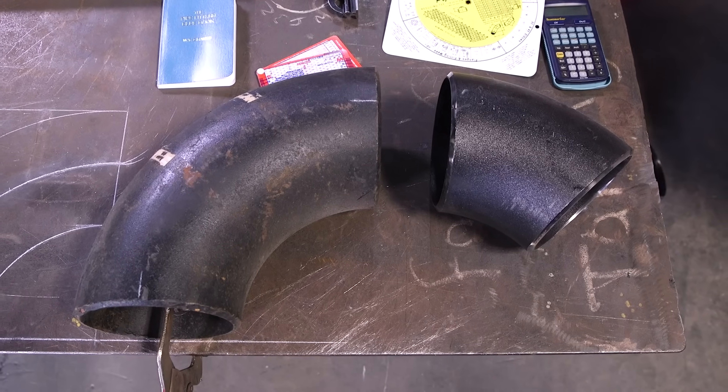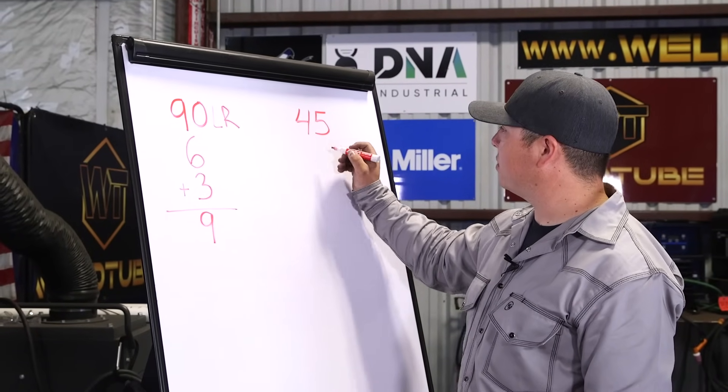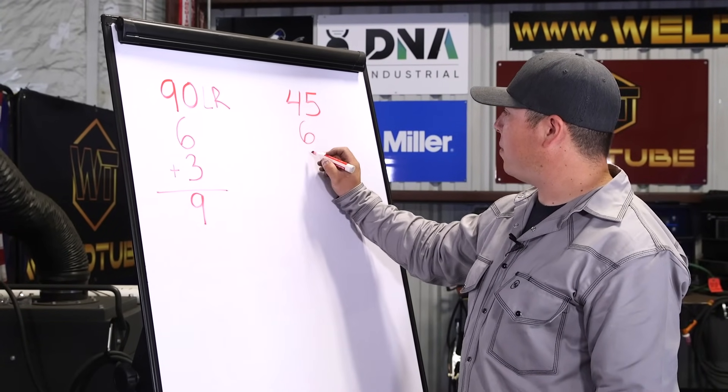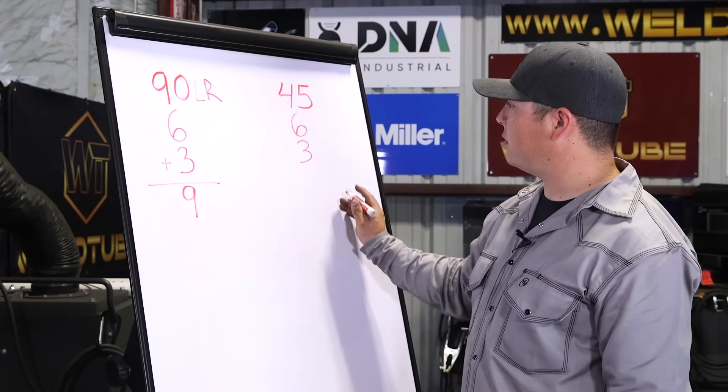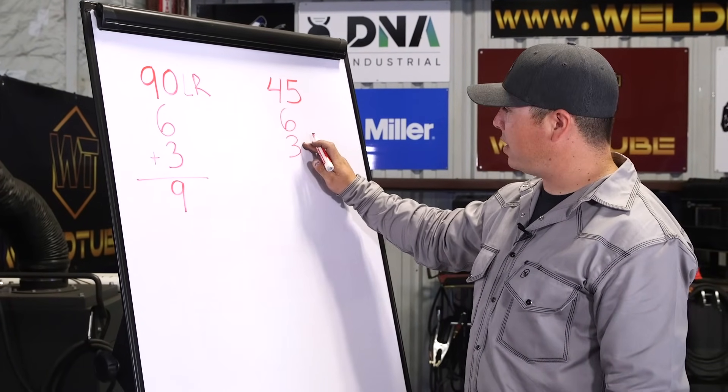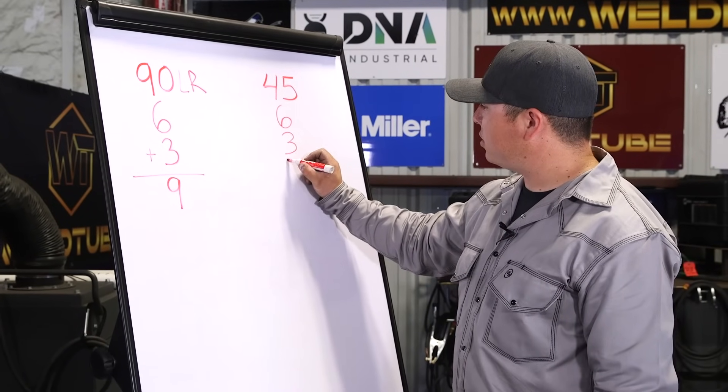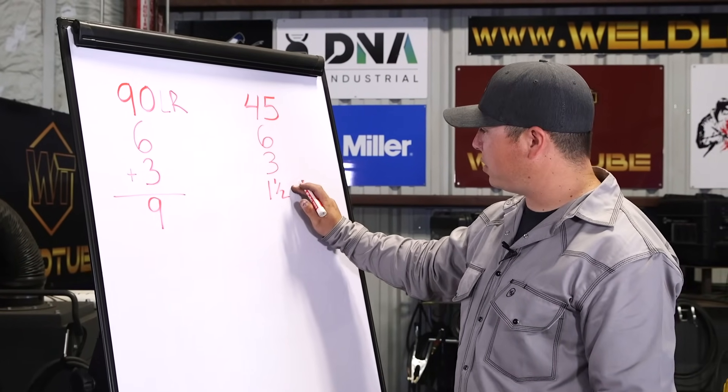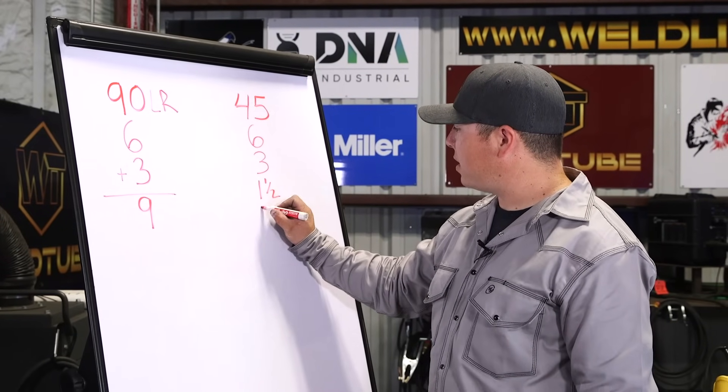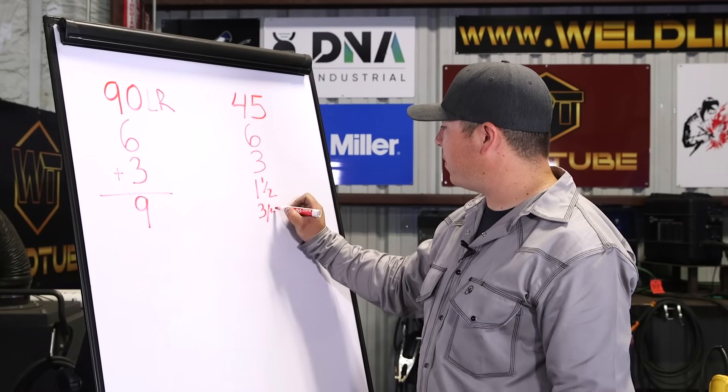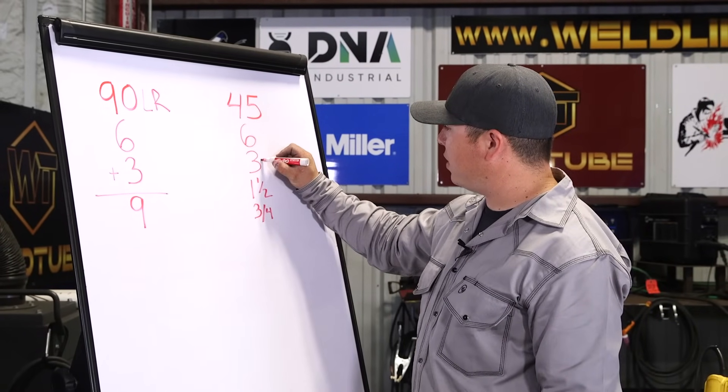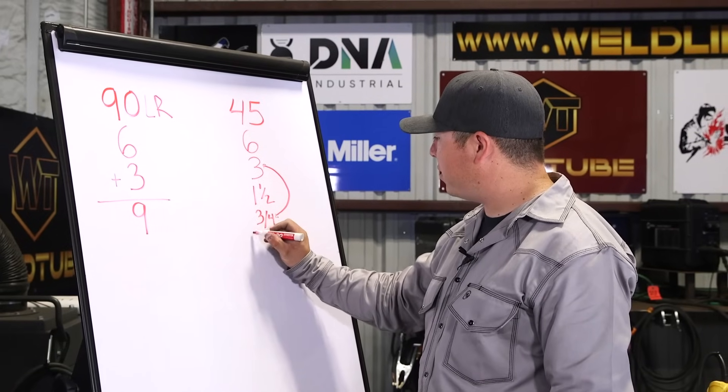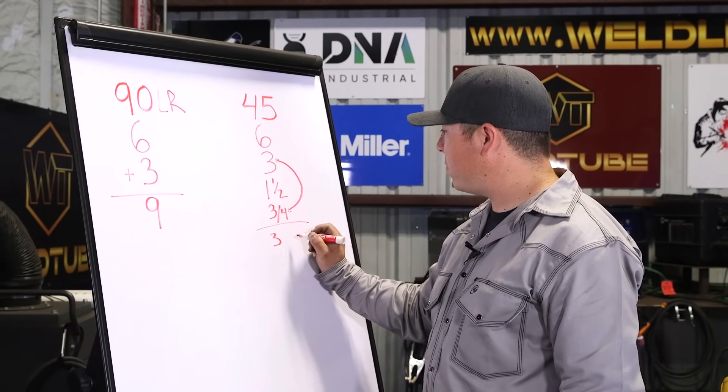And for our 45 degree elbow, we're going to do a very similar process. So we go with our nominal pipe size, which is 6 inches. Break that down in half, that'll give us 3 inches. Same as our 90. We're going to break this down in half again, which will give us one and a half. And now we break this down one more time, and half again, and that'll be 3 quarter. And now we take this number and this number and we add them up. 3 plus 3 quarter, 3 and 3 quarter inches.